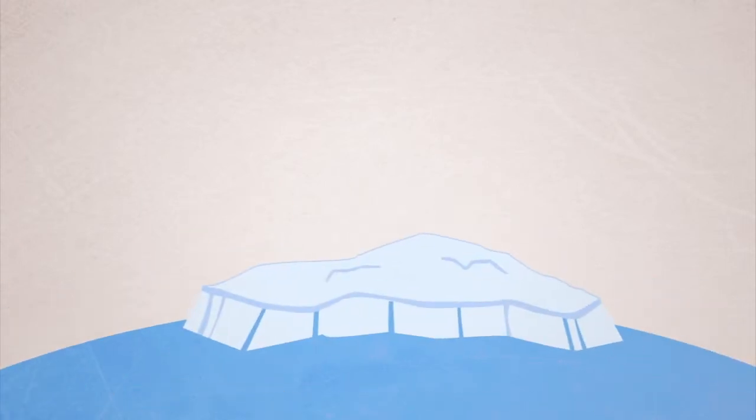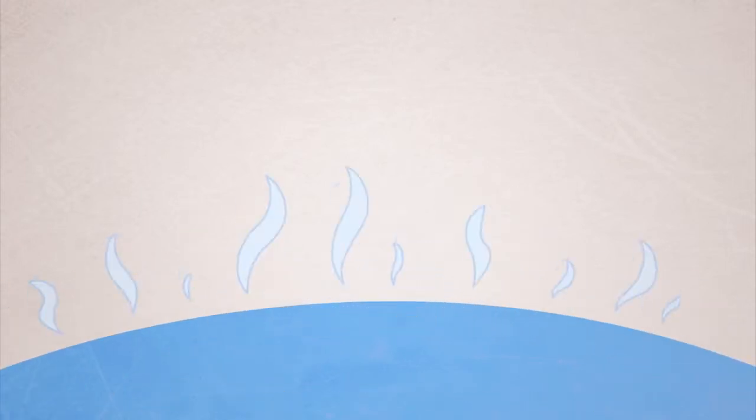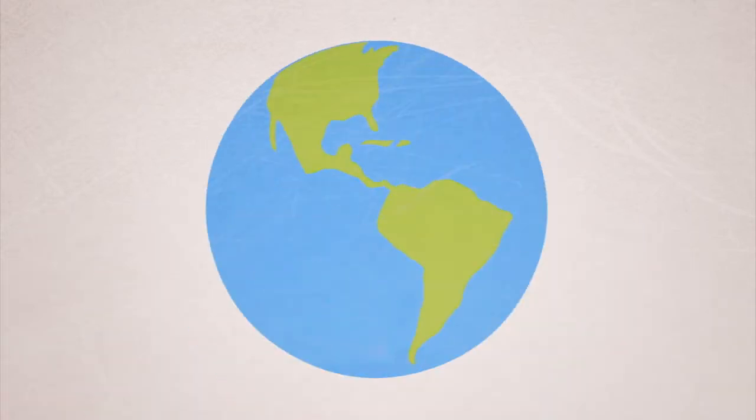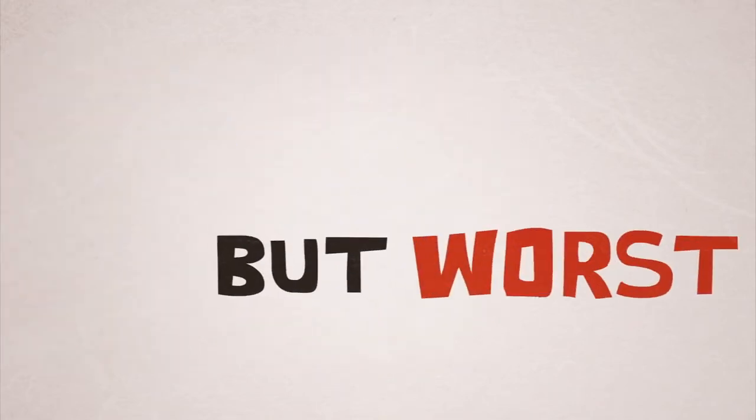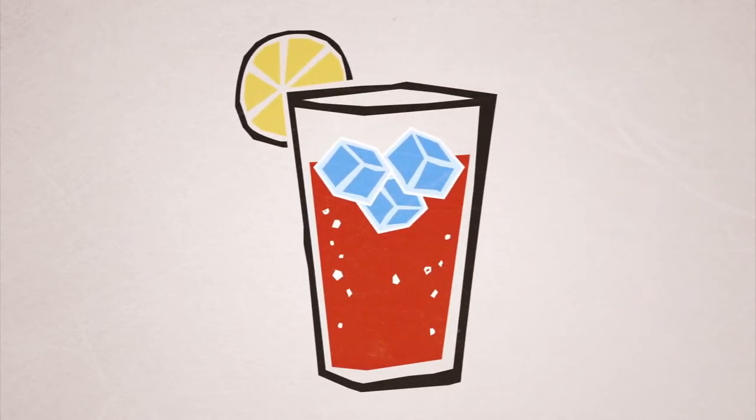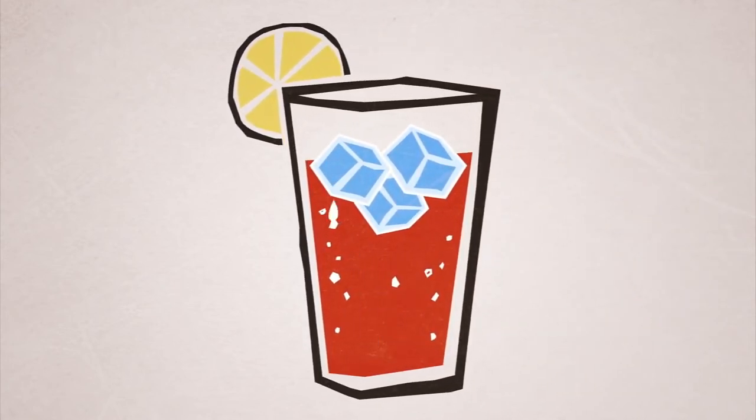Say goodbye to the white polar ice caps reflecting sunlight that would otherwise bake the planet. In fact, forget the oceans as we know them, which at over 70% of the Earth's surface area, regulate the atmosphere of the whole planet. But worst of all, there would be no ice tea. Mmm, ice tea.